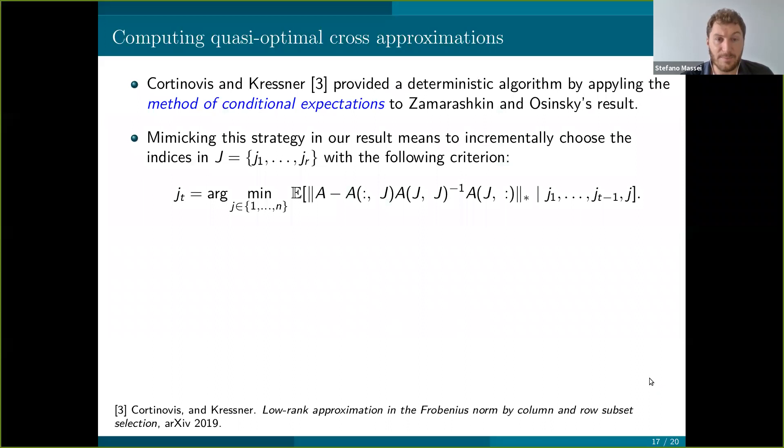These are nice results, but they don't tell us anything about how to compute the approximation that have these properties. To deal with this task, Cortinovis and Kressner have recently provided a deterministic and polynomial algorithm that finds quasi-optimal cross approximation in the Frobenius norm by derandomizing the results of Zamanashkin and Osinski. Their approach is based on the method of conditional expectation and can be also applied to our results. So that's what we did. We applied their approach to the proof of the result in the previous slide.